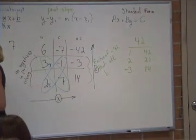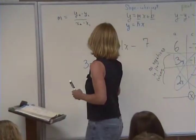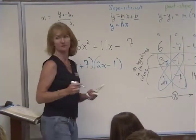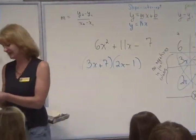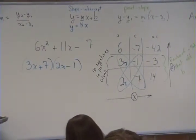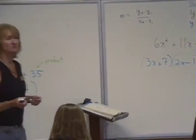The answer is 3x plus 7. So it's positive 7. And 2x minus 1. That's as complicated as this is going to get on the factoring side of the exam. How many of those do we have on the exam? Like one in the other one? Yeah.